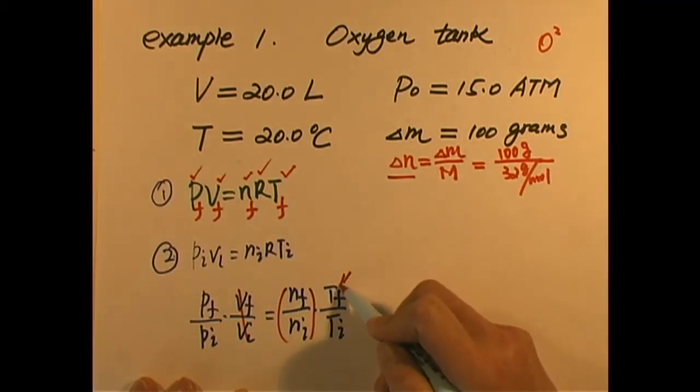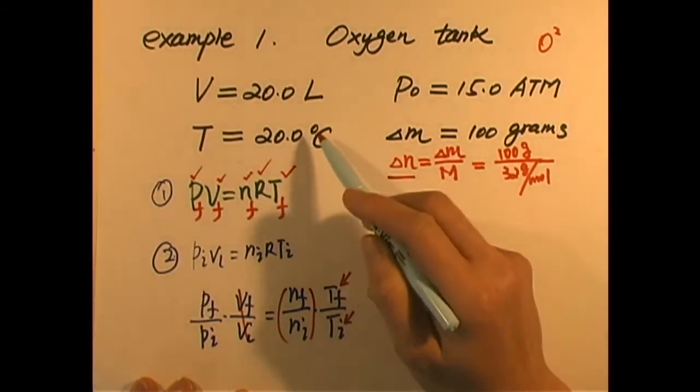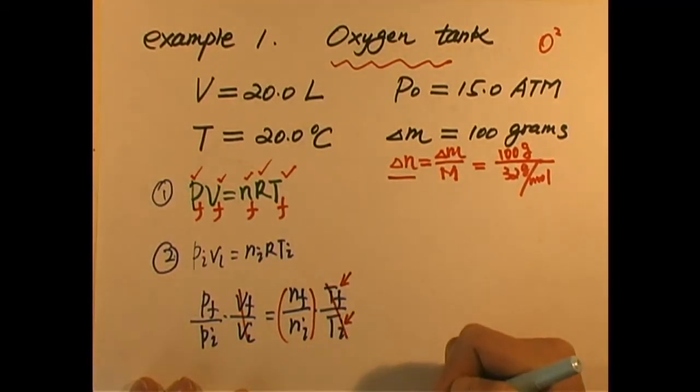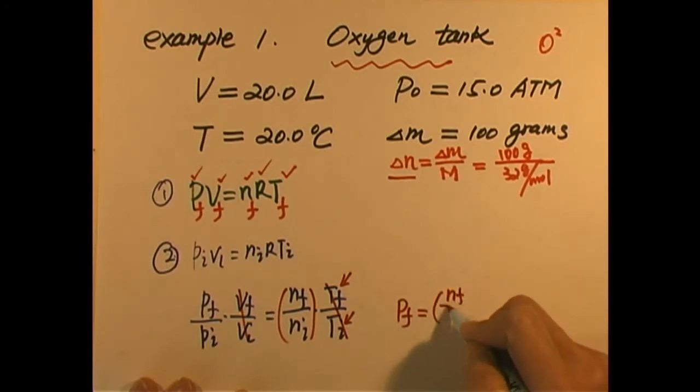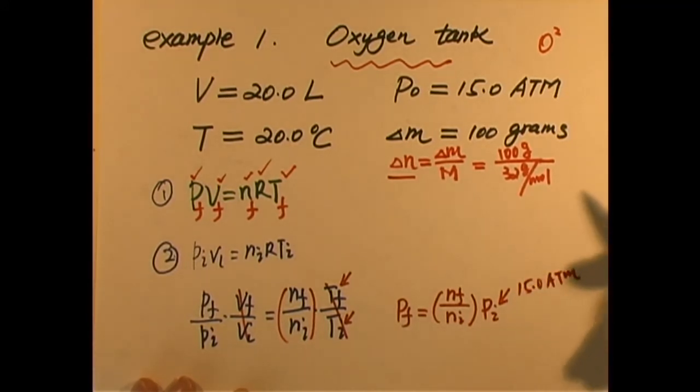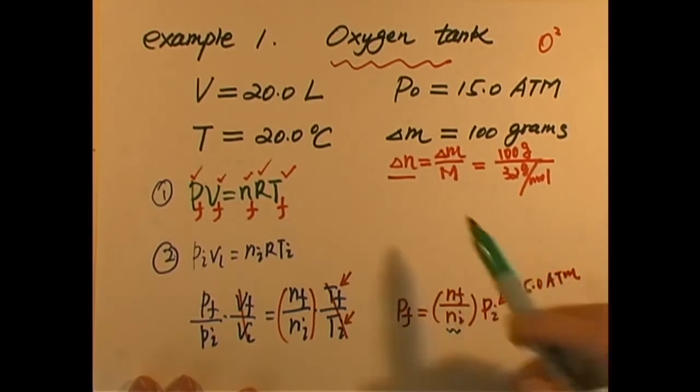Temperature-wise, we know it. Final temperature and initial temperature in our case, even though it's given at 20 degrees Celsius, but we know we have to convert to Kelvin. But in this case, the tank remains in the same room. So this cancels because final temperature equals initial temperature. So this tells us if we want to get our final pressure, that is the ratio of how many moles left in the container divided by the initial. The ratio of this times the P initial. That's it.